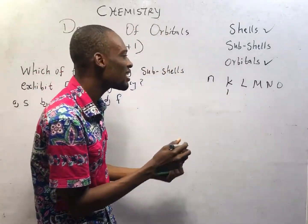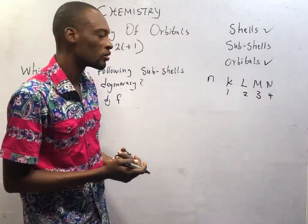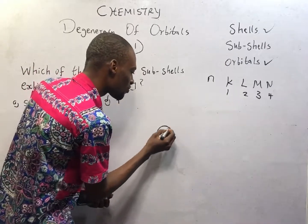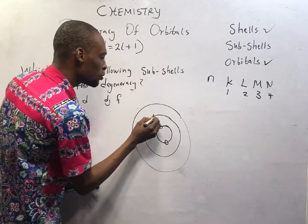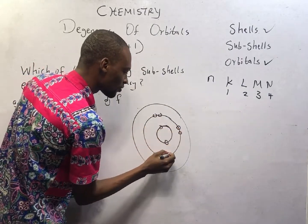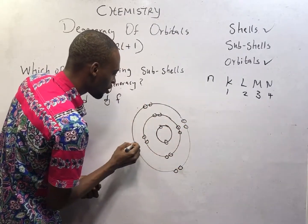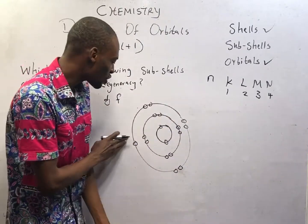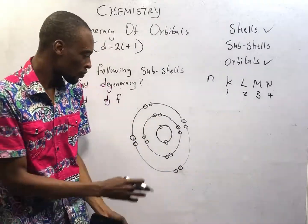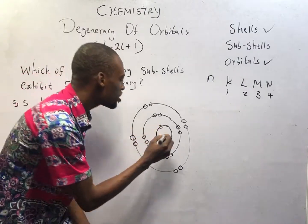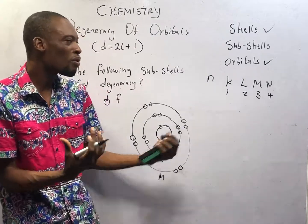K shell is represented by 1, L shell is 2, M is 3, N is 4, O is 5, and so on. If you've ever drawn something like this — you put 2 electrons here, 8 here, then 8 or 7 here, and you say this one needs 1 to complete — you understand the concept of shells. Each of these lines are shells. The first one represents the K shell, this is L shell, and this is the M shell. They are the principal quantum number.